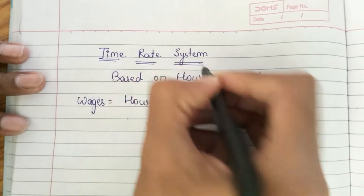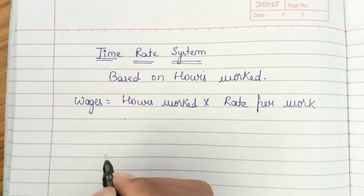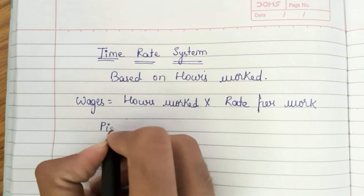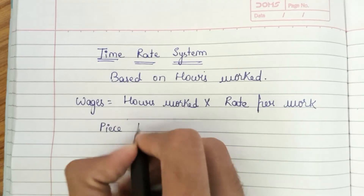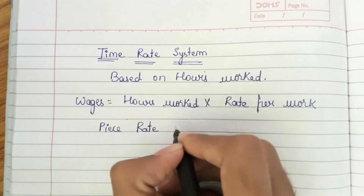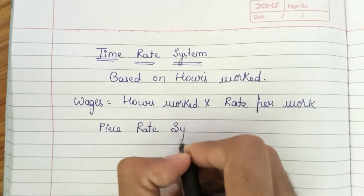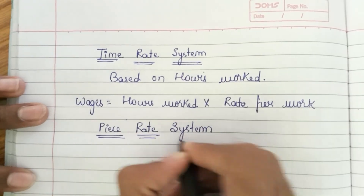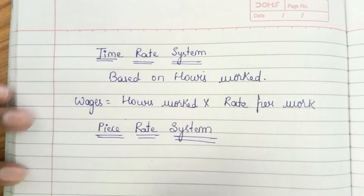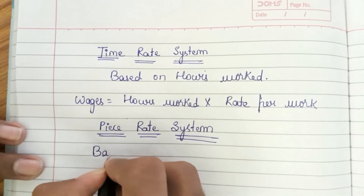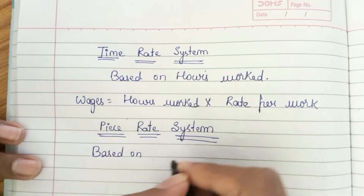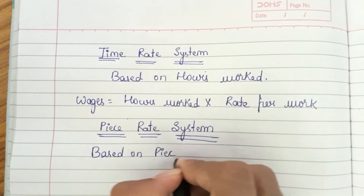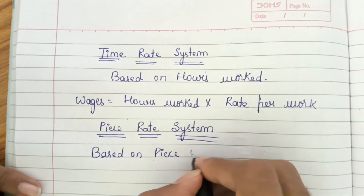There is a second type that is the piece rate system. In the piece rate system, the payment is made based on the number of pieces you produce — based on the number of pieces you manufacture.